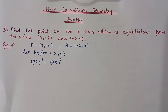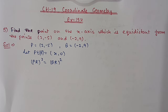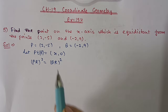Hello students, we are doing Chapter 19 Coordinate Geometry, Exercise 19.4. Till question number 4 we have already discussed in the previous video, and today we are starting from question number 5. Find the point on the x-axis which is equidistant from the points (2, -5) and (-2, 9). Because this point is on the x-axis, it means it will have only an x-reading; the y-reading will be 0. So let the point be (x, 0).